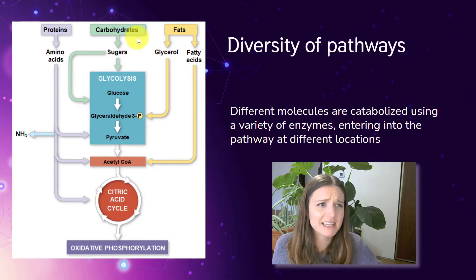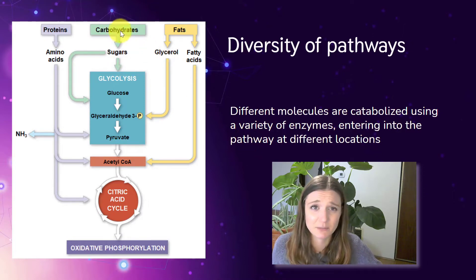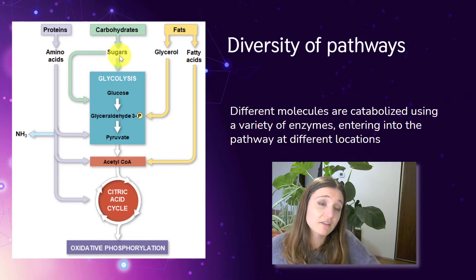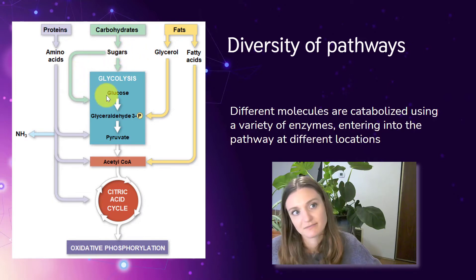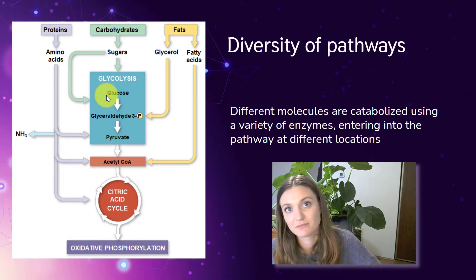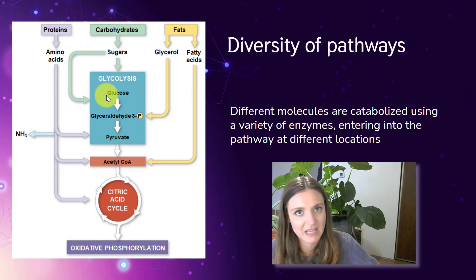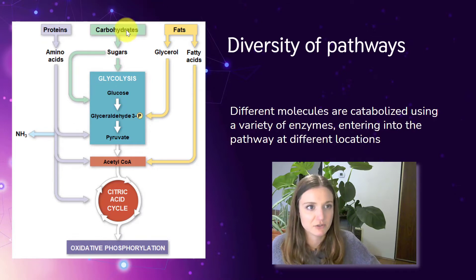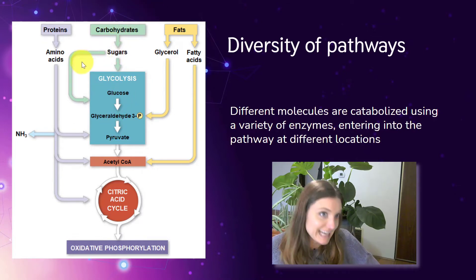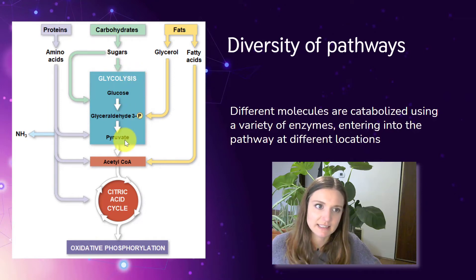Carbohydrates are broken down into sugars, which enter into glycolysis. If it's a sugar other than glucose, it will be converted into glucose. So you can break apart fructose and make it into glucose. Sugars and carbohydrates usually end up being converted to glucose by enzymes, and then they start off in glycolysis.